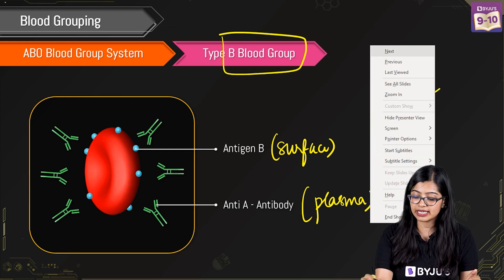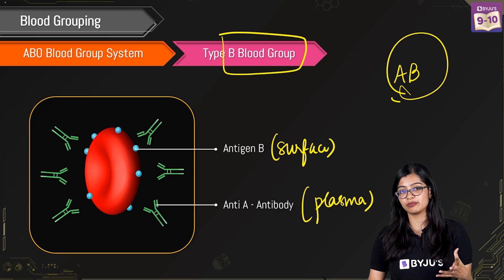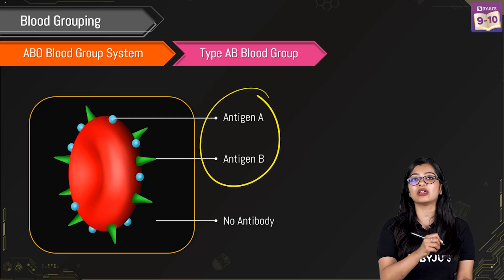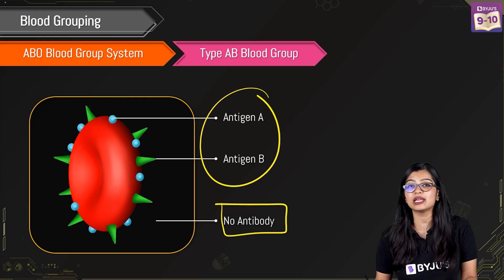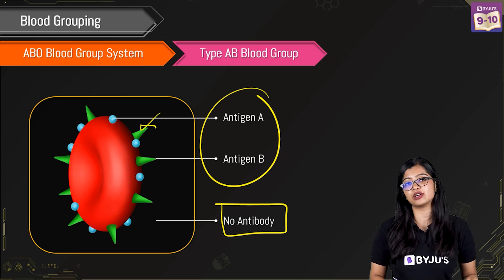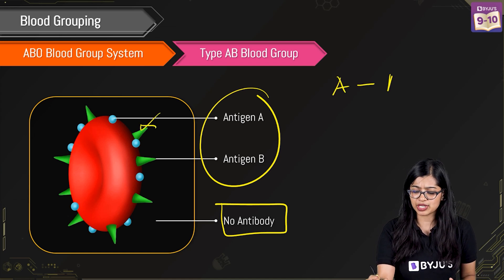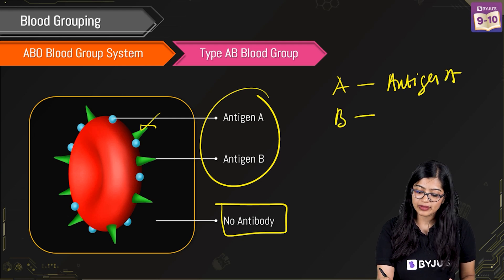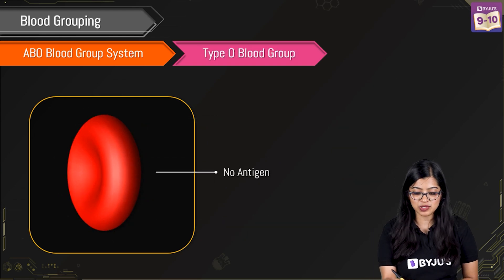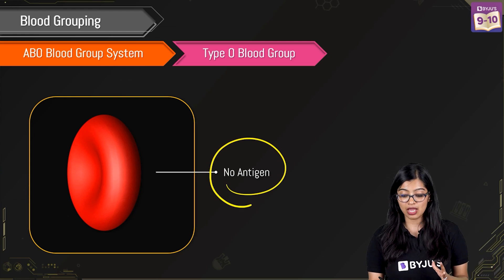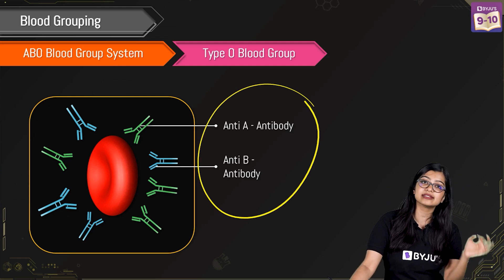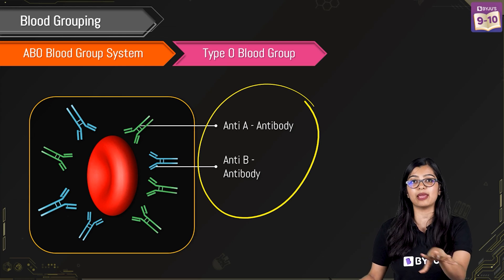The third blood group is AB. As the name suggests, both antigen A and antigen B are present on the surface. But there will be no antibodies in the plasma, because if any kind of antibody were there it would trigger the agglutination reaction. For blood group O, there is no antigen present on the surface of the RBC at all, but in the plasma both anti-A and anti-B will be present.